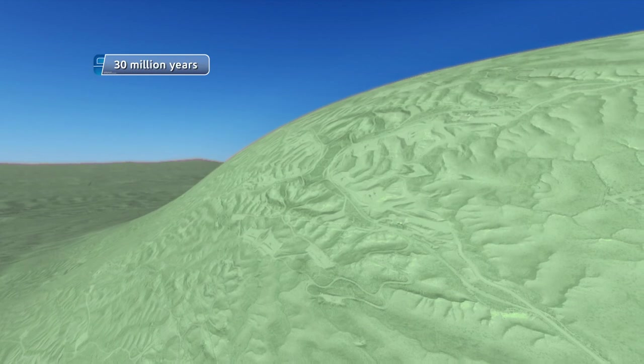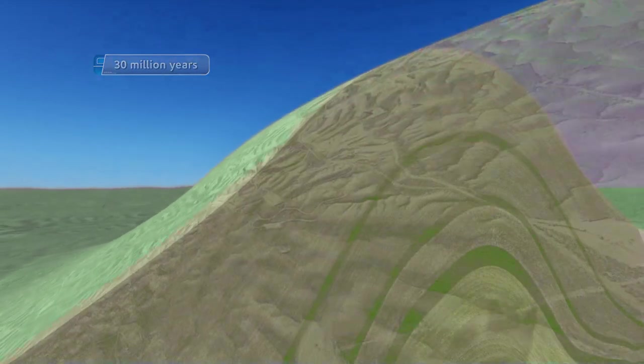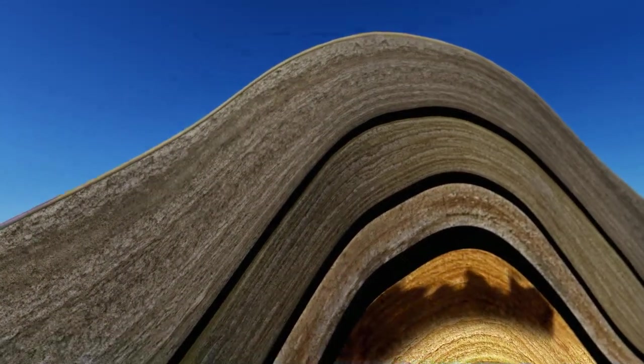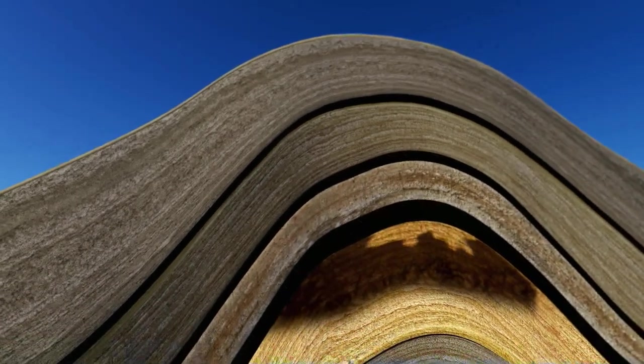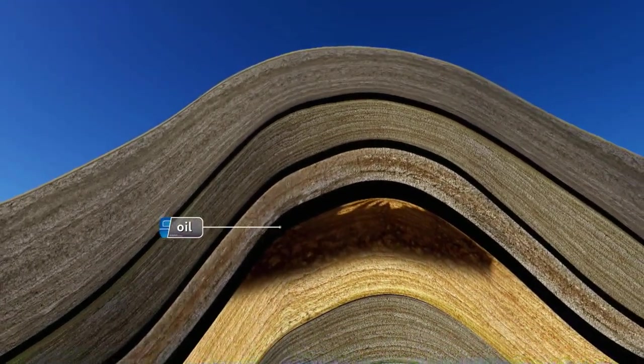Millions of years ago, oil began migrating to the Nisku and Leduc Reservoirs, where the tiny pore spaces within the dome-like structure of the carbonate formation have retained the oil in place.